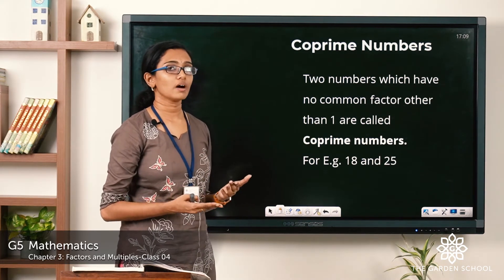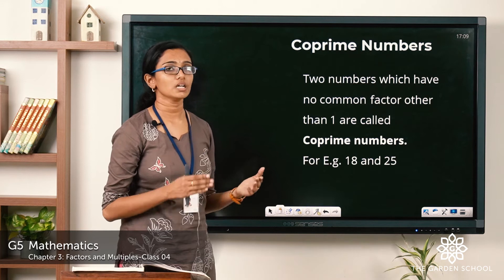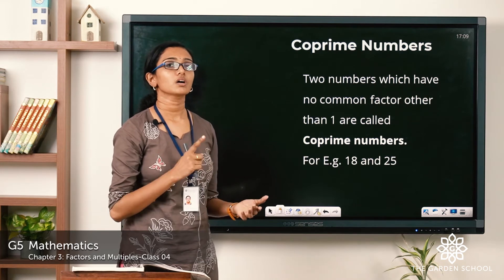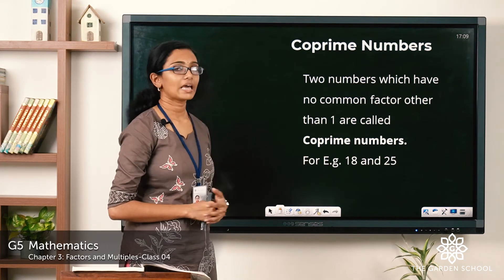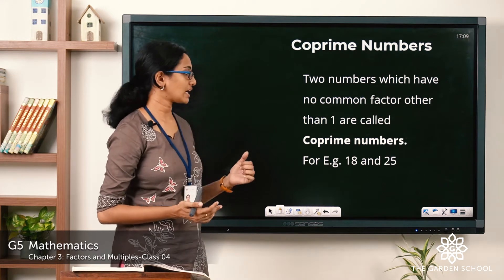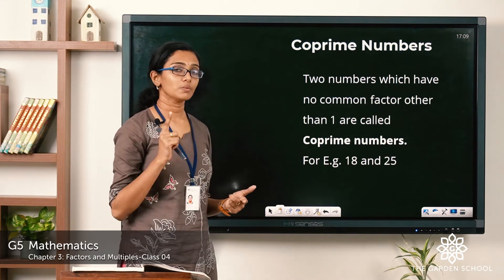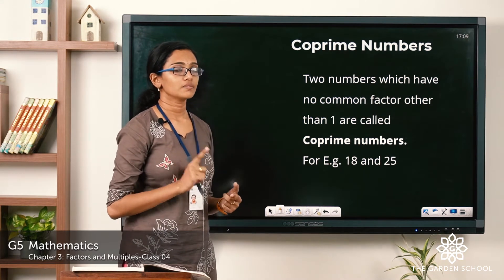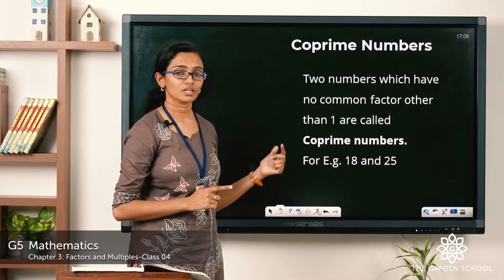When two numbers have only 1 as the common factor, they are called co-prime numbers. Here is one more example: 18 and 25. 18 and 25 have only one factor in common, which is 1, so they are co-prime numbers.